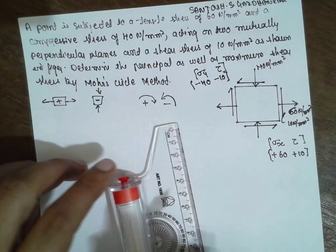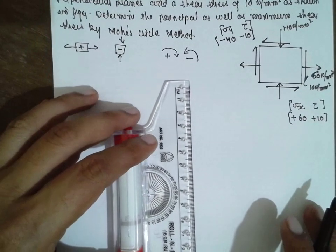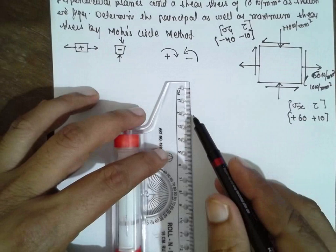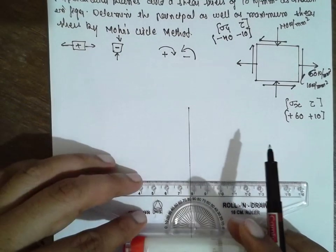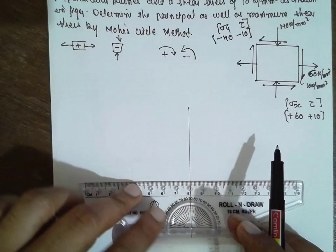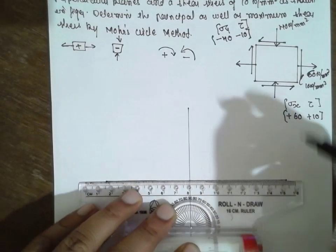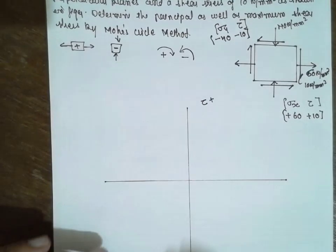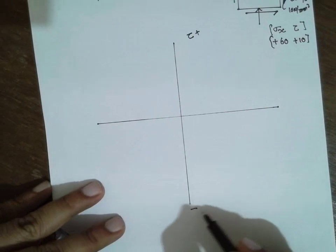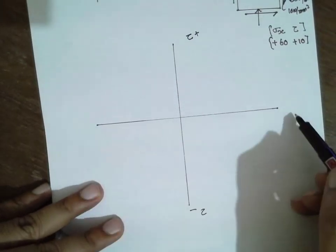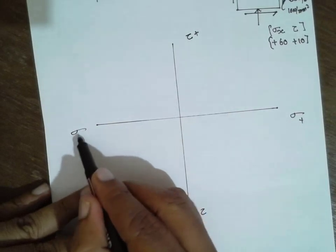Then I will draw the line here — the xy line. This is tau positive, this is tau negative, sigma positive, sigma negative.